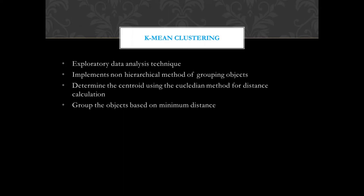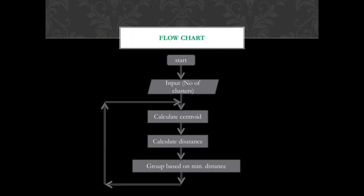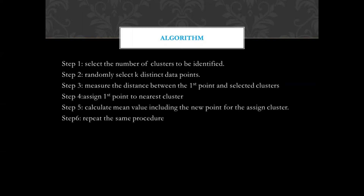This is the flowchart. We start by inputting the number of clusters — here k represents the number of clusters. After deciding the cluster size, we calculate the centroid. Then we calculate the distance between each data point and the centroid, and group data points based on minimum distance. This process repeats until we get consistency in cluster size or cluster assignments.